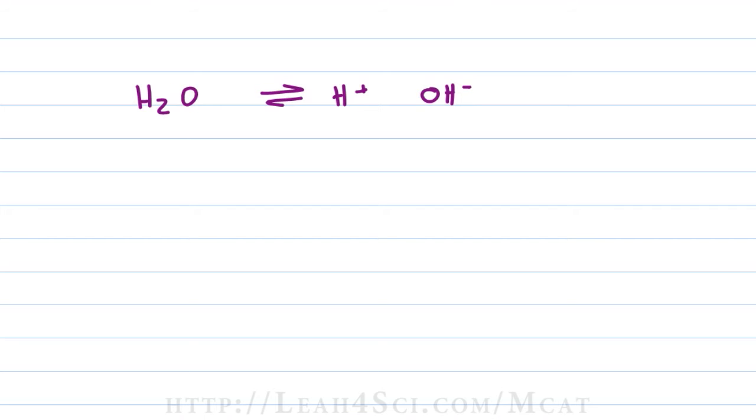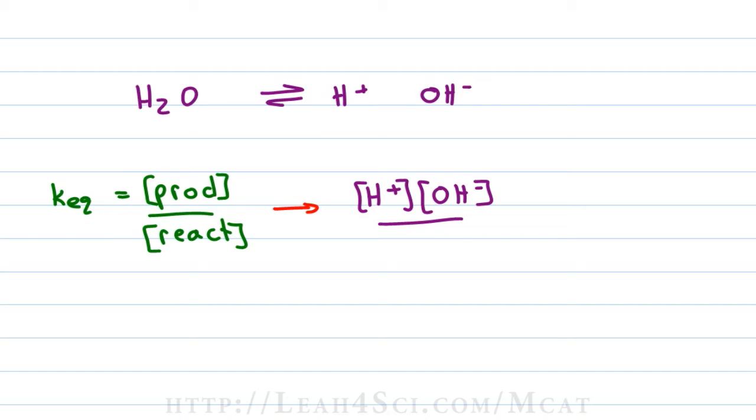Because it's an equilibrium reaction, we need a way to calculate the ratio of reactants to products. We need an equilibrium expression, so we'll write the Keq is equal to products over reactants. In this example, the products are H+ and OH-, and the reactant is water.